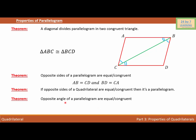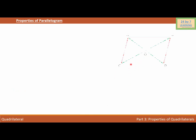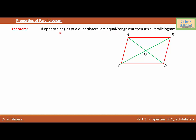The next theorem is: opposite angles of a parallelogram are congruent or equal. So we can write that angle A is congruent to angle D and angle B is congruent to angle C. Here is parallelogram ABCD, where AD and BC are the diagonals. The converse theorem states: if opposite angles of a quadrilateral are equal or congruent, then it is a parallelogram.